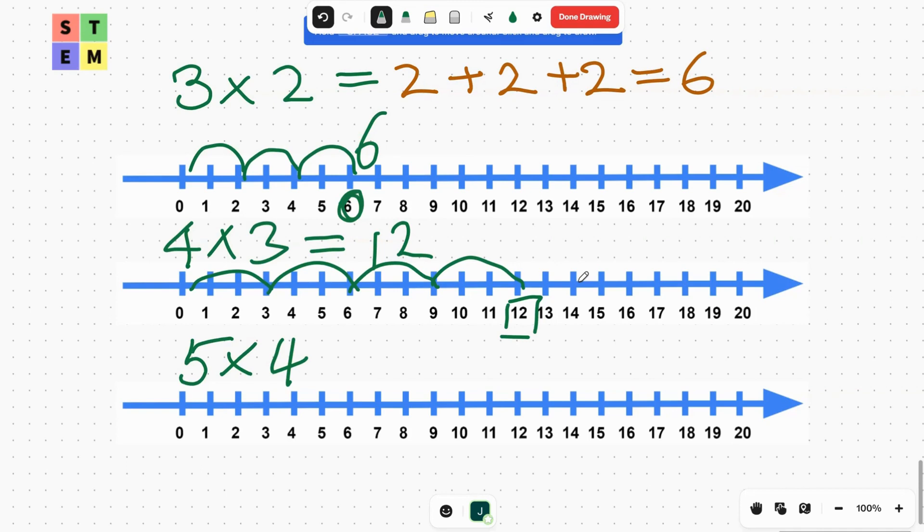We have one hop of four, two hops of four, three hops of four, four hops of four, and five hops of four. We end up at 20. So 5 × 4 = 20.